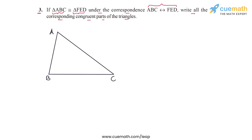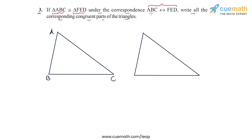Here's a figure of an arbitrary triangle ABC that I've drawn. Now consider another triangle which is congruent to this triangle. Our correspondence relation is ABC congruent to FED, where A corresponds to F, B corresponds to E, and C corresponds to D.